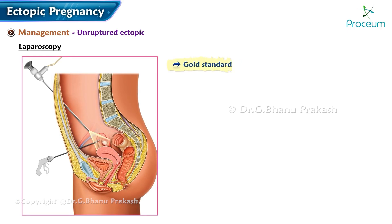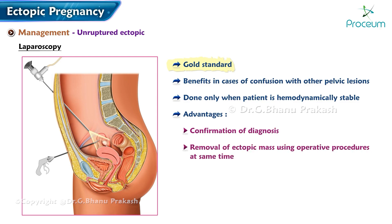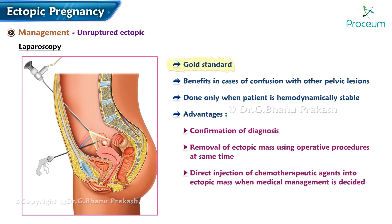Laparoscopy is the gold standard and offers benefits in cases of confusion with other pelvic lesions. It should be employed only when the patient is hemodynamically stable. Advantages include confirmation of diagnosis and removal of the ectopic mass using operative procedures, as well as direct injection of chemotherapeutic agents into the ectopic mass when medical management is decided. However, laparoscopy carries a risk of false positive or false negative diagnosis in two to five percent of cases.